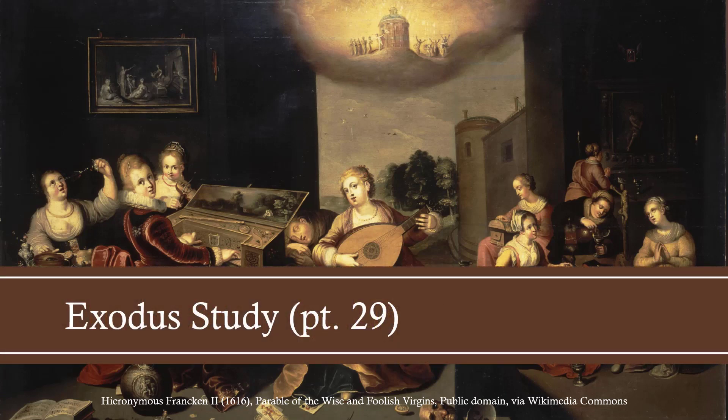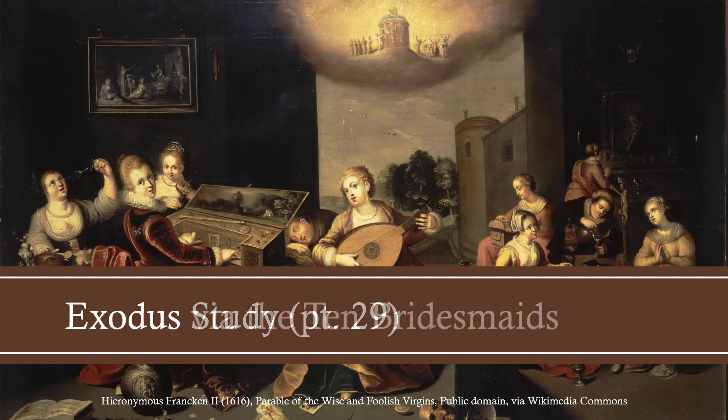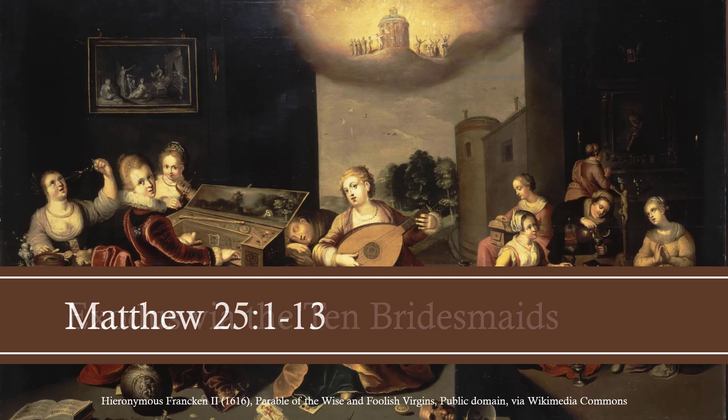We're going to read the whole parable from Matthew 25:1–13 and then talk about the components. As we talk about them, we'll move back to Exodus and show how they're connected — either directly to Exodus or to the rabbinic interpretations of Exodus. Jesus is teaching here around 33 AD, and this parable looks through the lens of history, including the interpretation of their sacred text. Exodus is way back around 1300 BC, depending on how you want to date it.